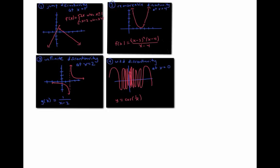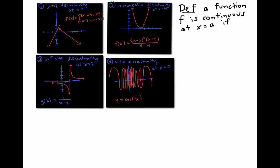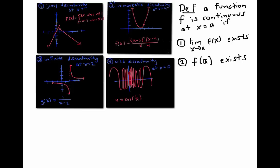So for a function to be continuous at x equals a, we need it to avoid all of these problems. To avoid a jump discontinuity, we can insist that the function's limit has to exist at x equals a. To avoid a hole or removable discontinuity, we can insist that f has to be defined at x equals a. To avoid the other kind of removable discontinuity — in which f(a) is defined but it's in the wrong place — we can insist that the limit of f(x) as x goes to a has to equal f(a).